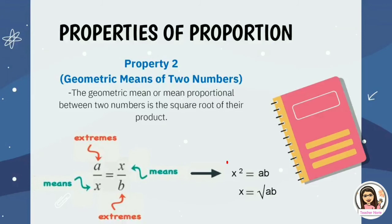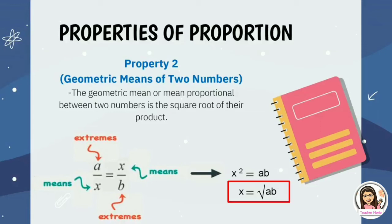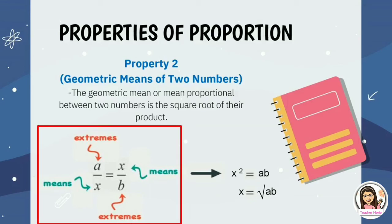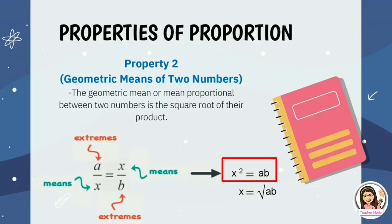Property 2: the geometric means of two numbers. The geometric mean, or mean proportional between two numbers, is the square root of their product. By multiplying a over x and x over b, we get x squared equals ab. Getting the square root of both sides, we have x equals the square root of ab.